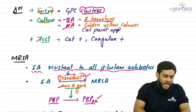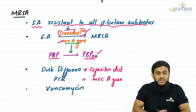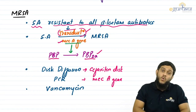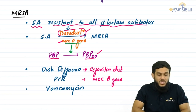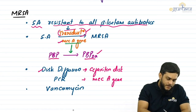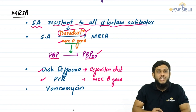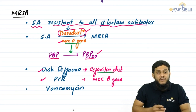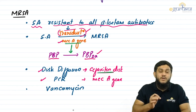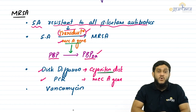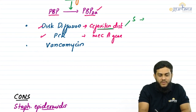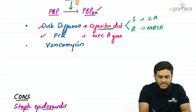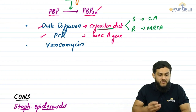It is important to identify MRSA because treatment changes — beta-lactam antibiotics are first-line for staphylococcus aureus, but MRSA is resistant to all of them. Two methods exist: phenotypic — disc diffusion using cefoxitin, a second-generation cephalosporin used as a marker for all beta-lactam antibiotics. If staphylococcus aureus is sensitive to cefoxitin it is regular S. aureus; if resistant, it is MRSA.